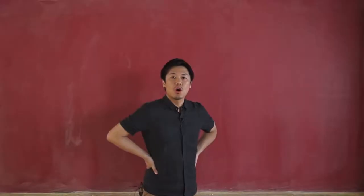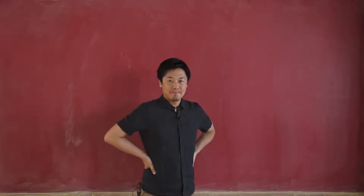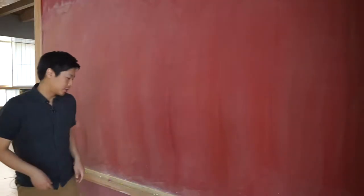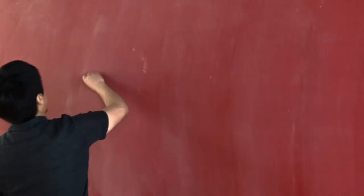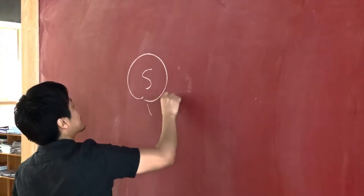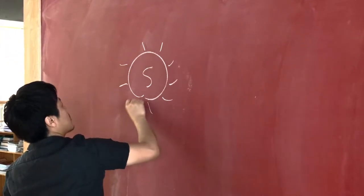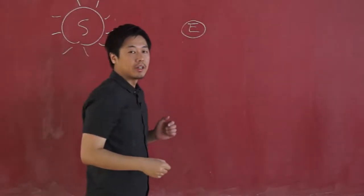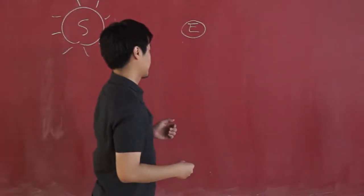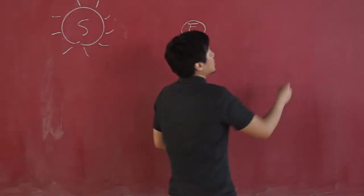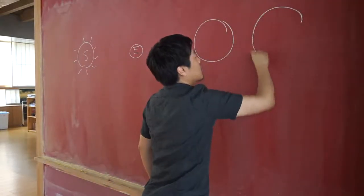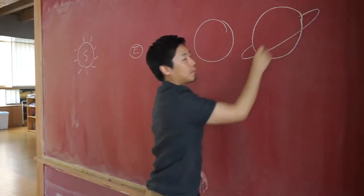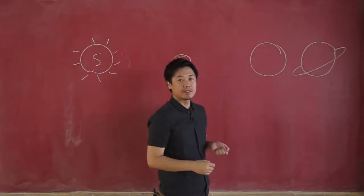Do you know ocean worlds in the solar system? Earth is not the only planetary body that has liquid water. Earth is orbiting around the sun. We are in the distance suitable for the existence of liquid water on the surface. But in regions far from the sun, we have multiple ocean worlds in the solar system.